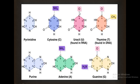In pyrimidines, if you attach a double bond oxygen, then you have uracil, and uracil is only found in RNA. If you have a double bond oxygen plus a five-carbon methyl group, this gives you thymine.